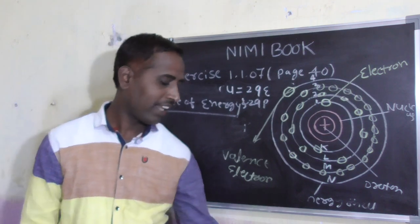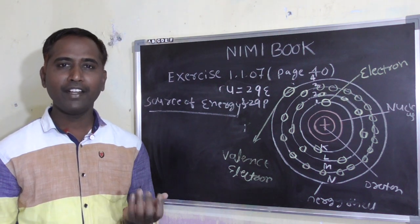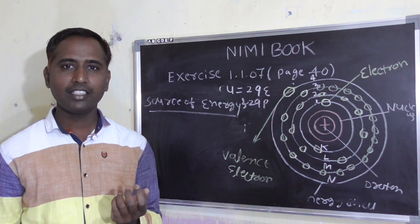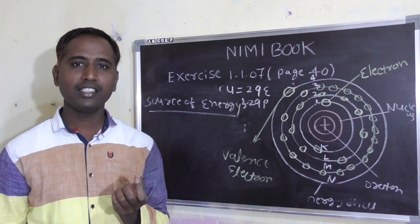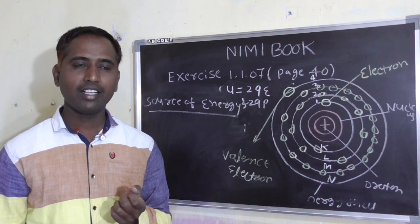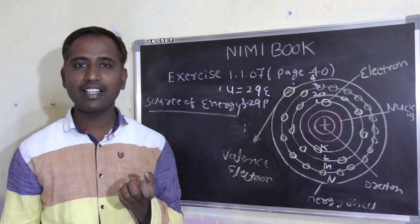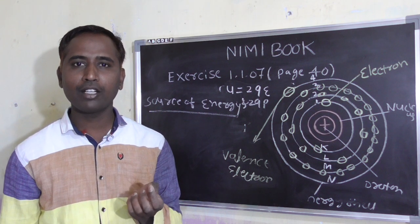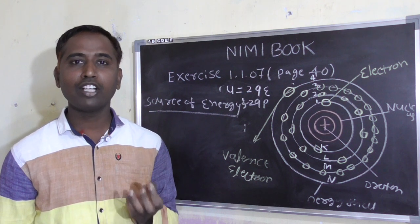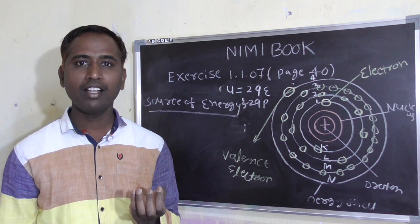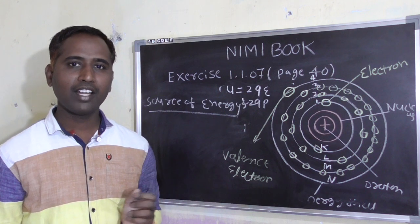The various types of energy sources are: wind energy, thermal energy, solar energy, hydrogen energy, hydroelectric energy, tidal energy, wave energy, biothermal energy, nuclear power energy, and fossil fuels — meaning coal, oil, and natural gas. These are the various types of energy sources.